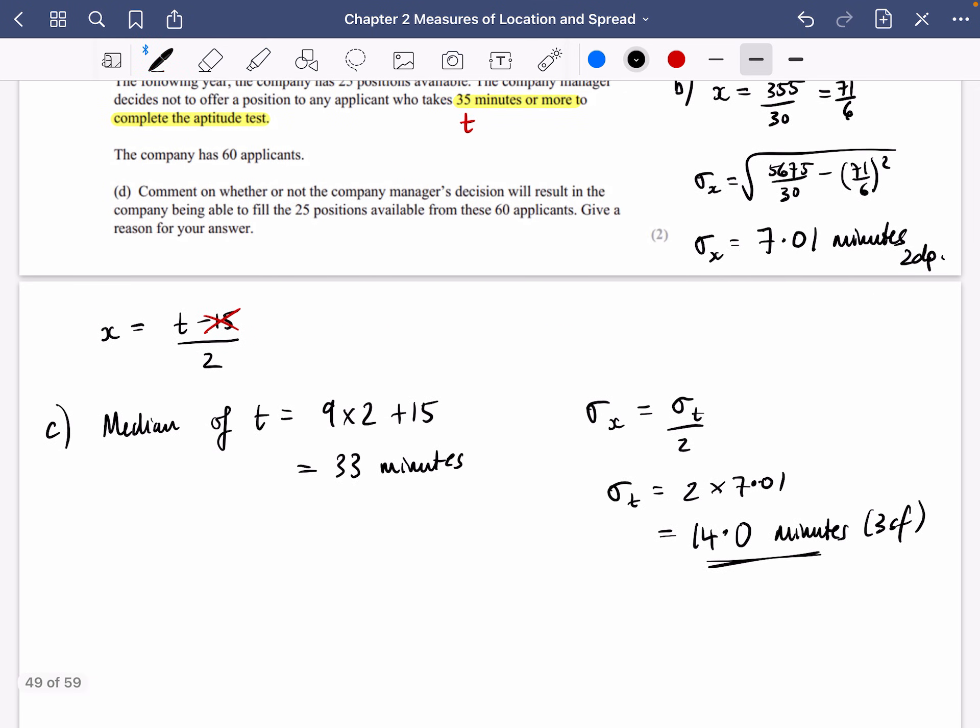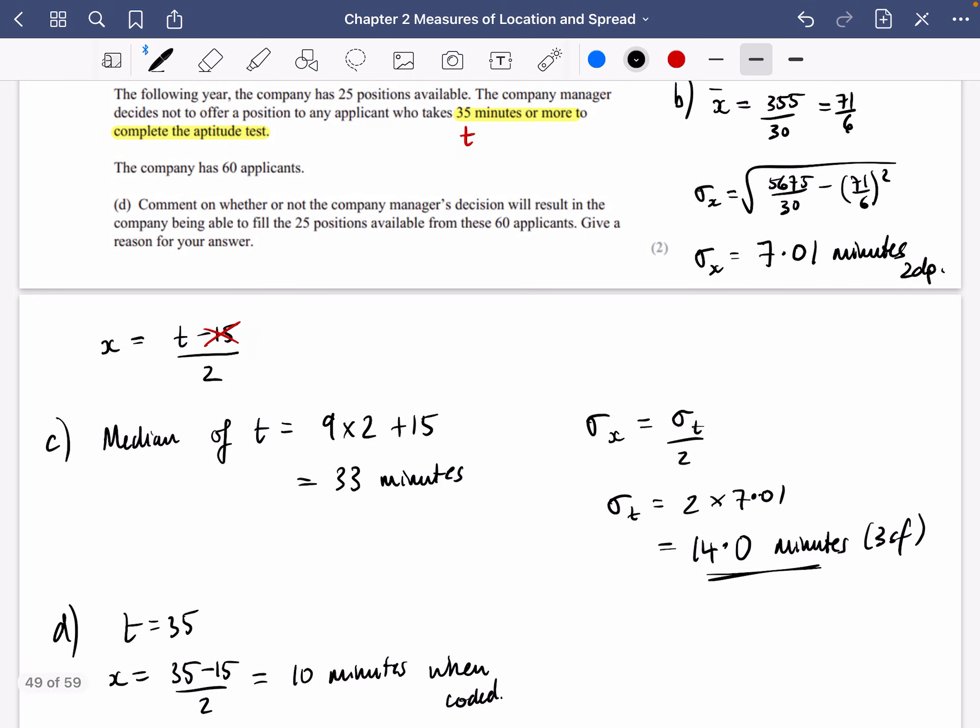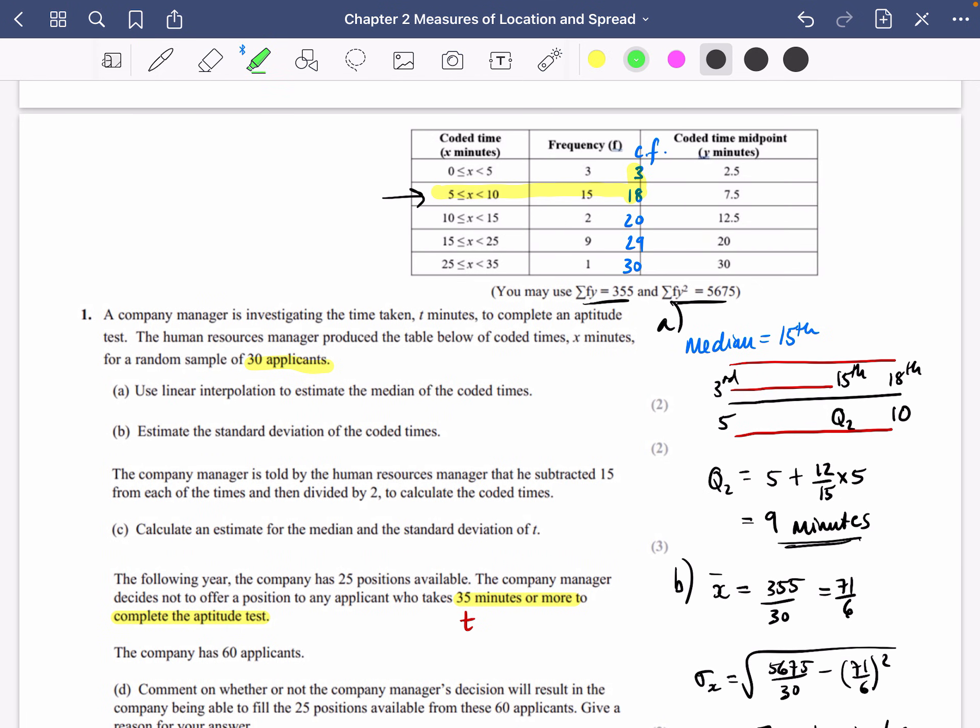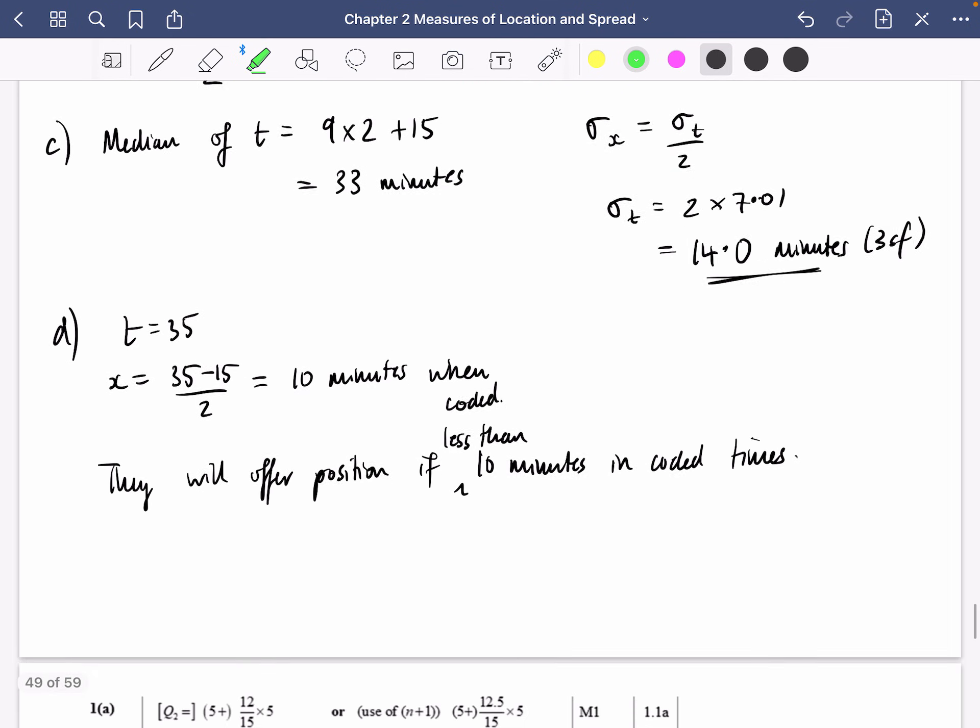So we're going to see what's happening here. We're going to find it for the X values. So T is 35. Let's figure out what X is. It's going to be 35. We're going to take away 15 and then we're going to divide it by 2. So it's going to be 10 minutes when coded. So if they get less than 10 minutes, they've said that they will offer the position to that person. So they will offer positions if less than 10 minutes. So let's go back to the coded times in the coded times that we've got here, how many people were less than 10 minutes? Well, less than 10 minutes. So 18 out of 30 people got less than 10 minutes here.